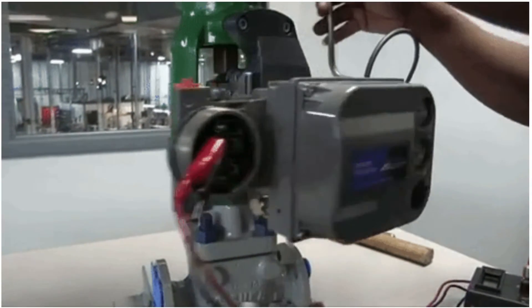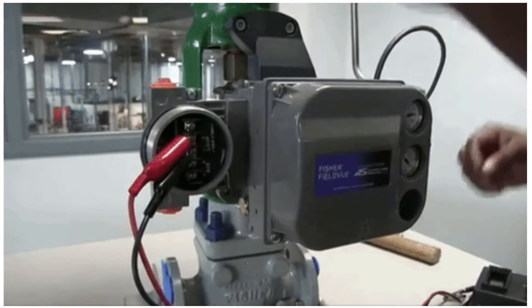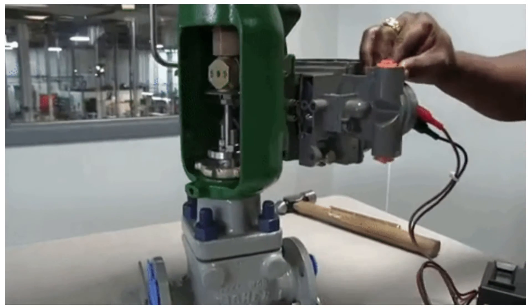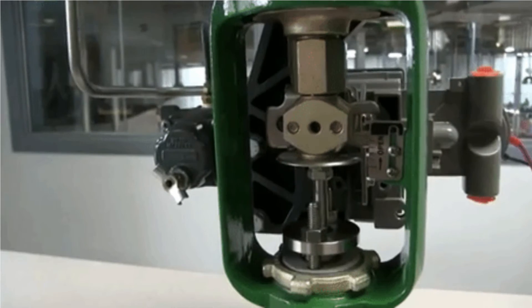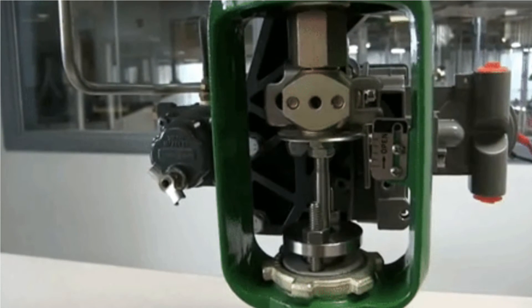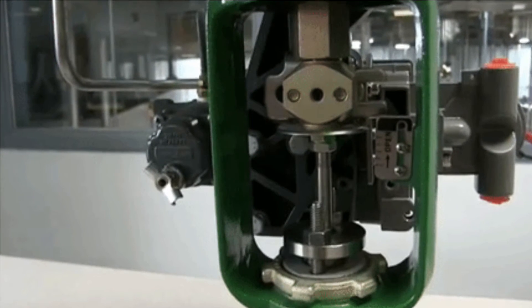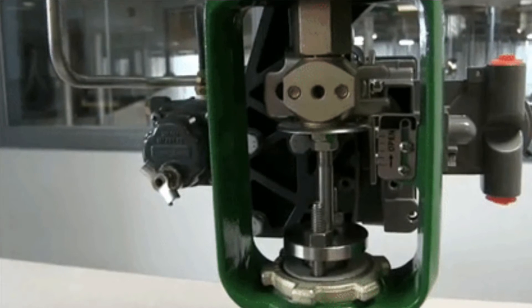A control valve positioner is an interpreter between the control valve assembly and the control system. It translates the output signal from the control system and adjusts the air to the actuator, which moves the valve to the position requested by the control system.